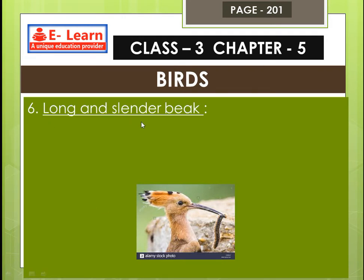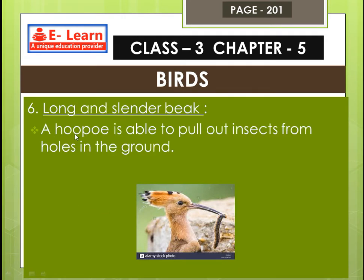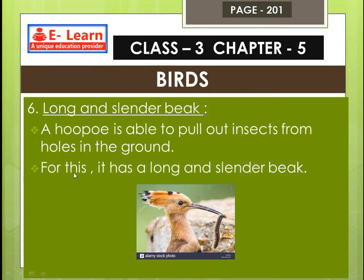Number 6: long and slender beak. A hoopoe is able to pull out insects from holes in the ground. It has a long and slender beak for this purpose, which helps it reach insects inside ground holes.